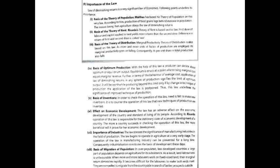Next is the basis of optimum production. With the help of this law, a producer can decide about optimum or equilibrium output. According to this law, a producer will decide the level of production at the point where marginal cost is equal to marginal revenue.